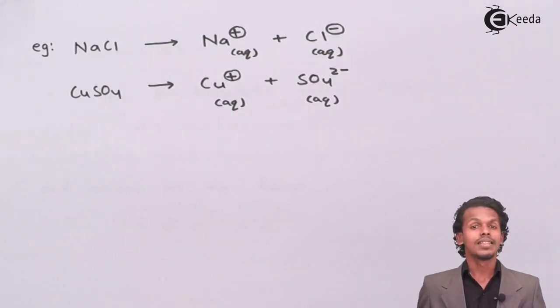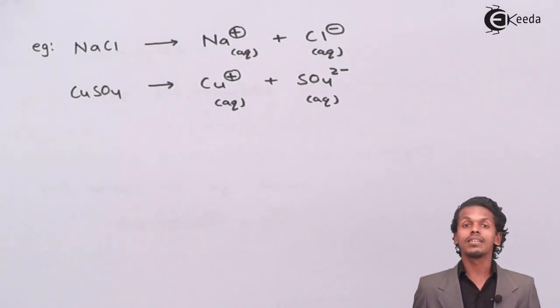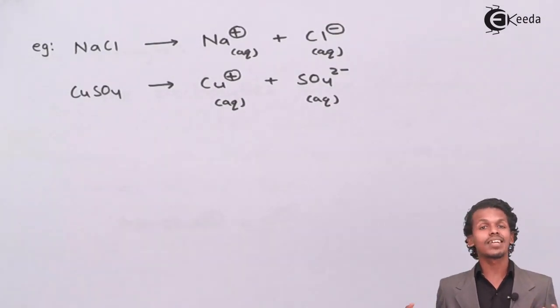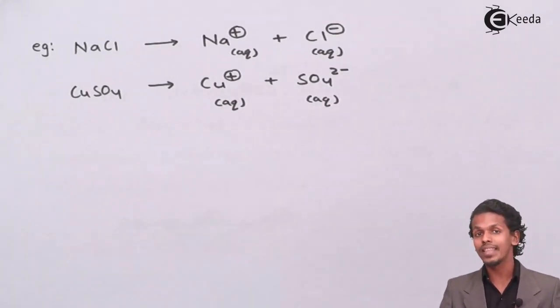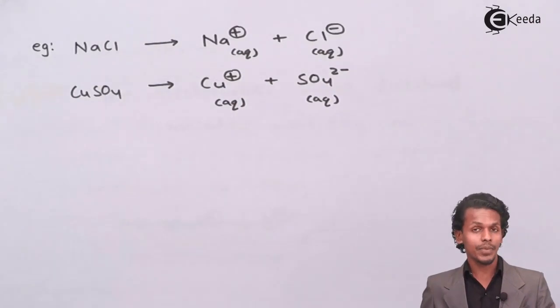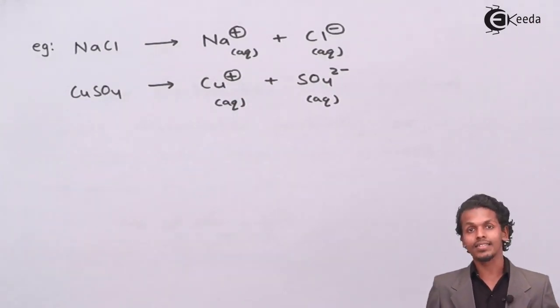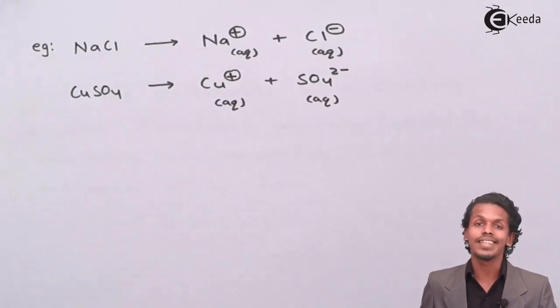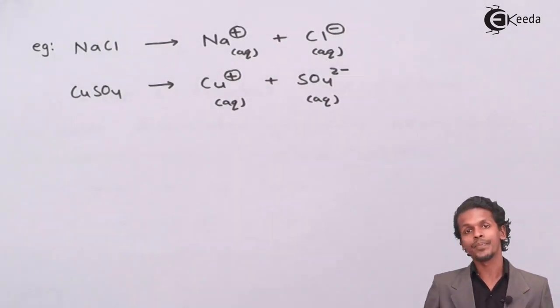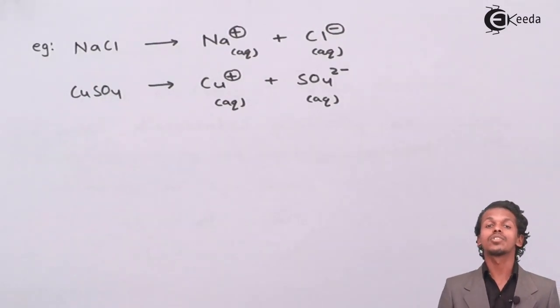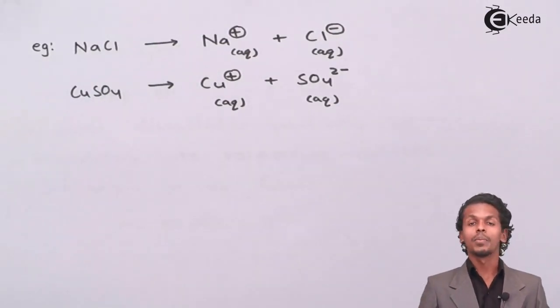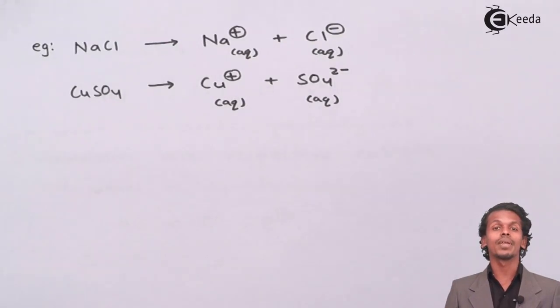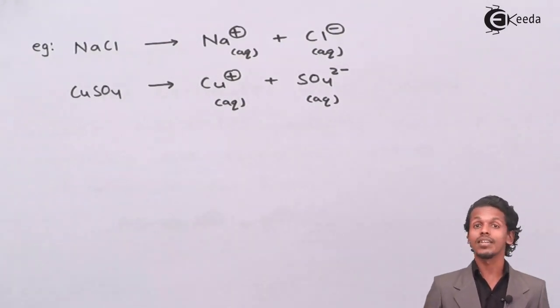And this is the reason that when they dissociate completely, because of that the electricity produced during the flow of ions, that is the flow of cation and the flow of anion, helps to conduct the electricity more efficiently and hence they are known as strong electrolytes. And because of which the redox reaction may occur very fast or the redox reaction occurs in a very efficient way.